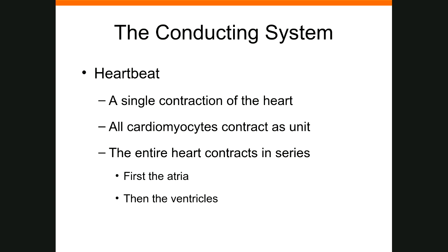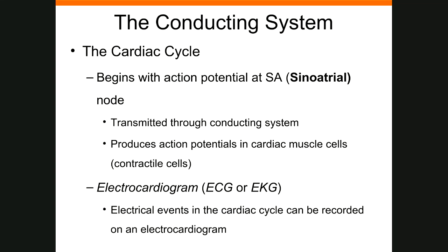The intrinsic conducting system works by beginning with an action potential in the cardiac muscle. We can detect those electrical events using an electrocardiogram, which we will talk about shortly. The intrinsic conducting system begins with an action potential at the pacemaker, more specifically at what we call the sinoatrial node.